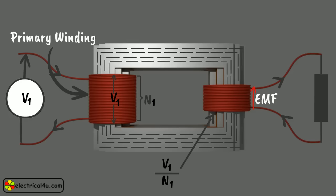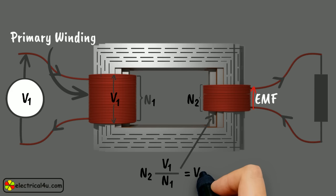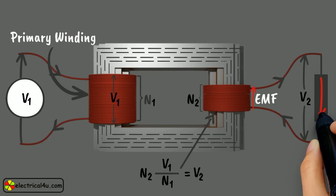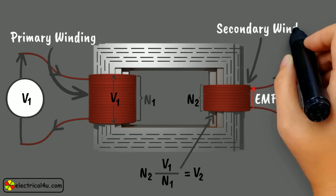We have understood that exactly this V1/N1 voltage will appear across each turn of the second winding. So if this second winding has N2 number of turns, then total voltage across the second winding is N2 × V1/N1, and let us call this V2. If any closed circuit is connected across this second winding, it will provide voltage V2 across the circuit, and due to this voltage there will be current flowing through the circuit. Normally, in a transformer, this second winding is connected with the load circuit, and this winding is referred to as secondary winding.